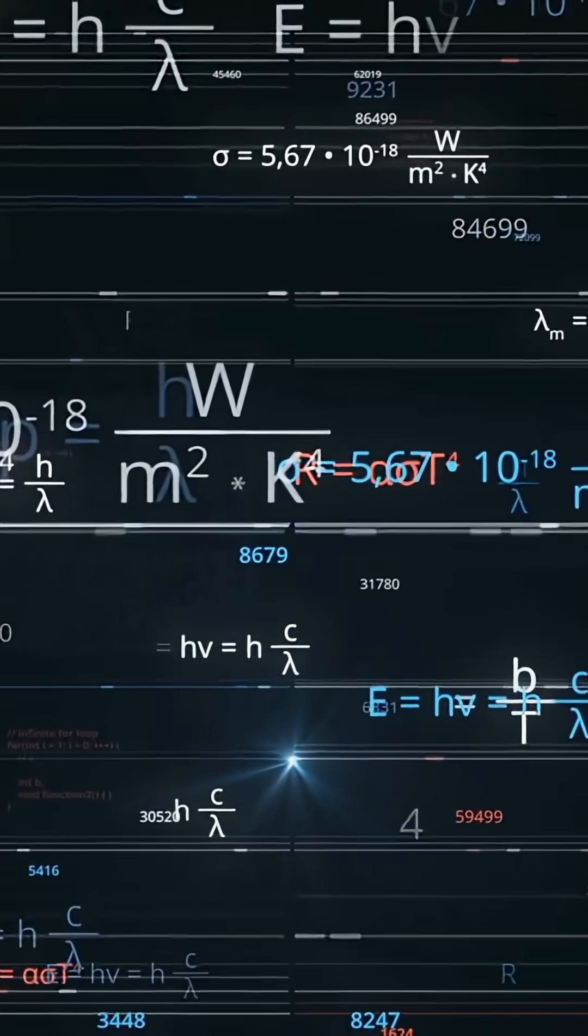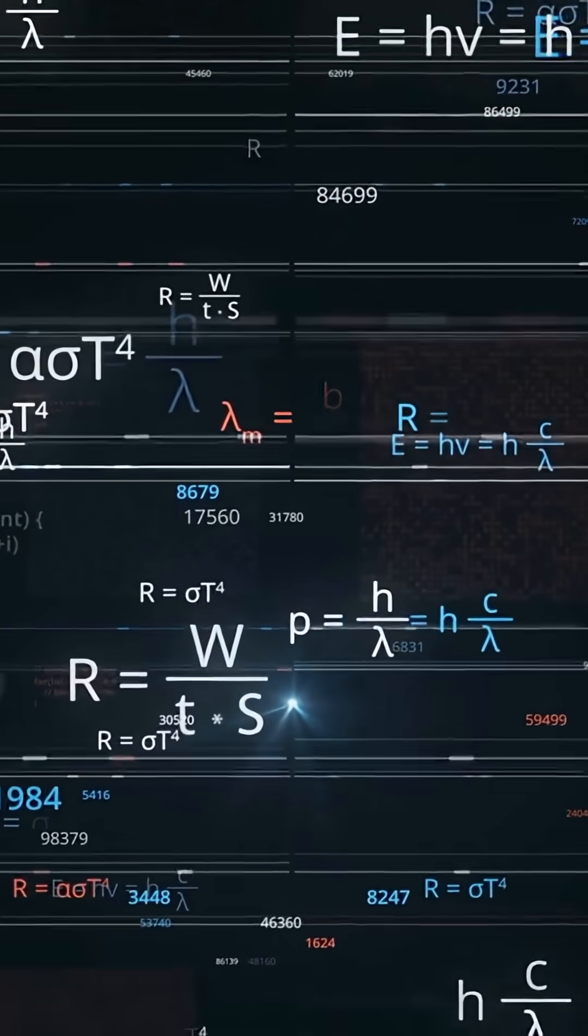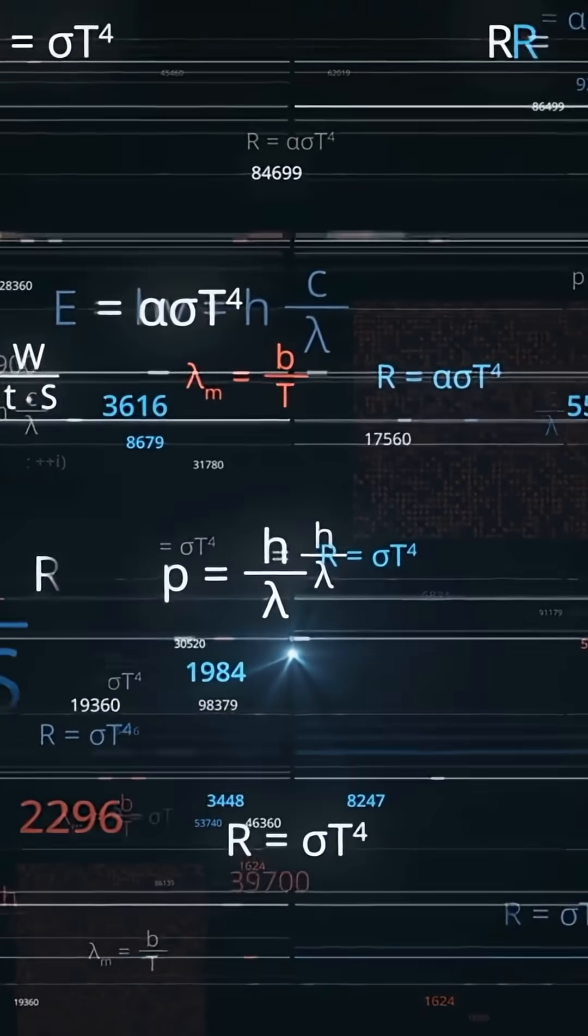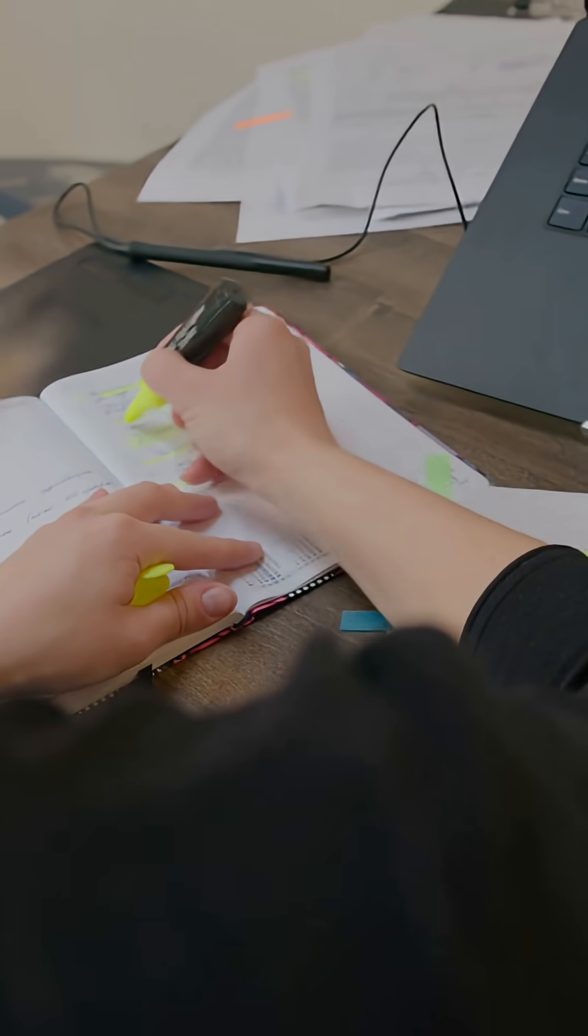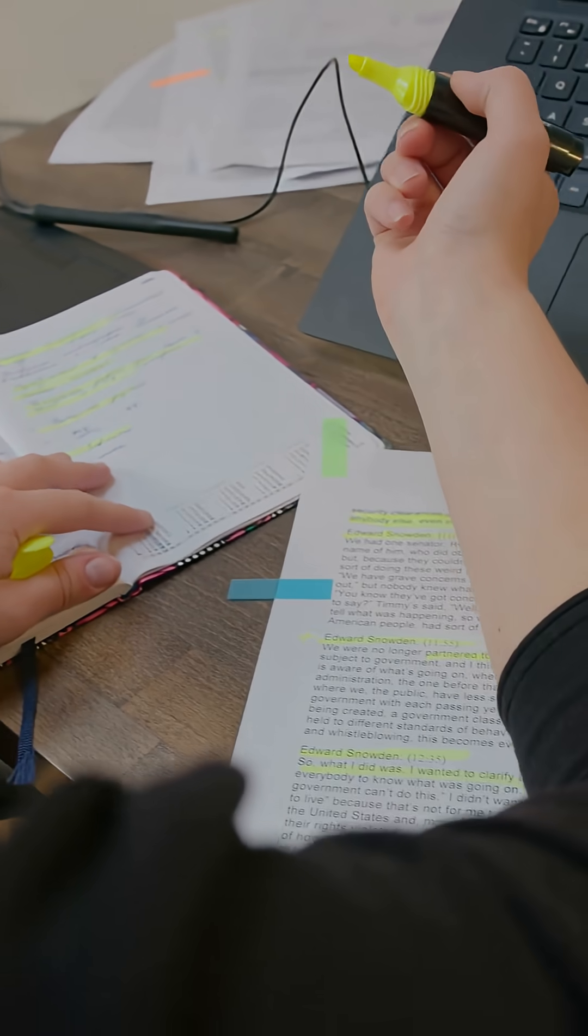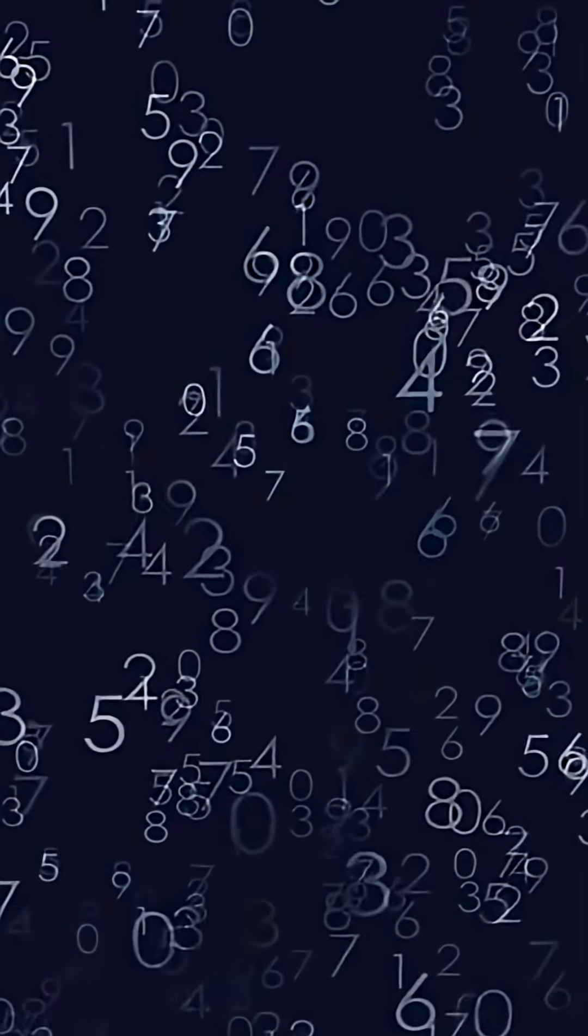In fact, scientists use something called Knuth's up arrow notation just to describe its size. And the crazy part? Even though it's absurdly massive, mathematicians proved it's still finite. It's not infinity.